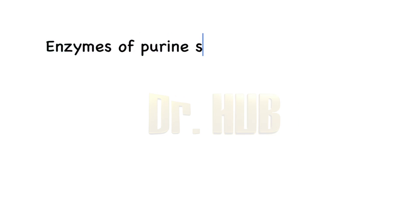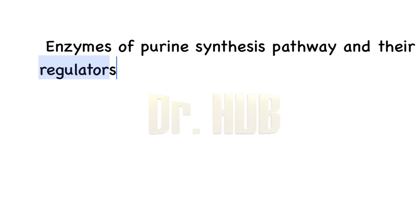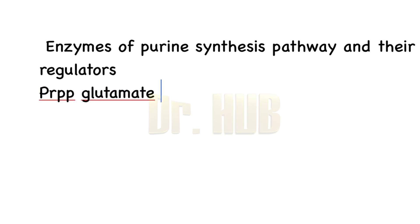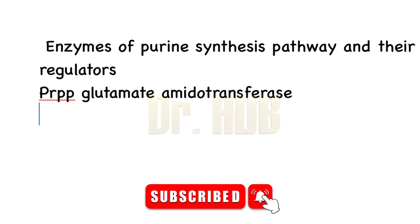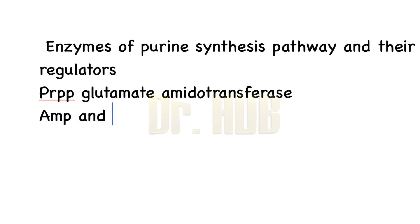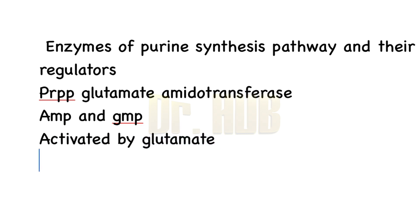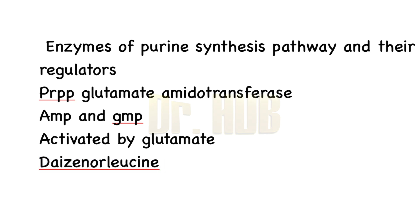Enzymes of the purine synthesis pathway and their regulators. First is PRPP glutamyl amidotransferase. This regulator is inhibited by AMP and also GMP, and is activated by PRPP and glutamate. Next comes diazenorleucine, which is an inhibitor of this enzyme.